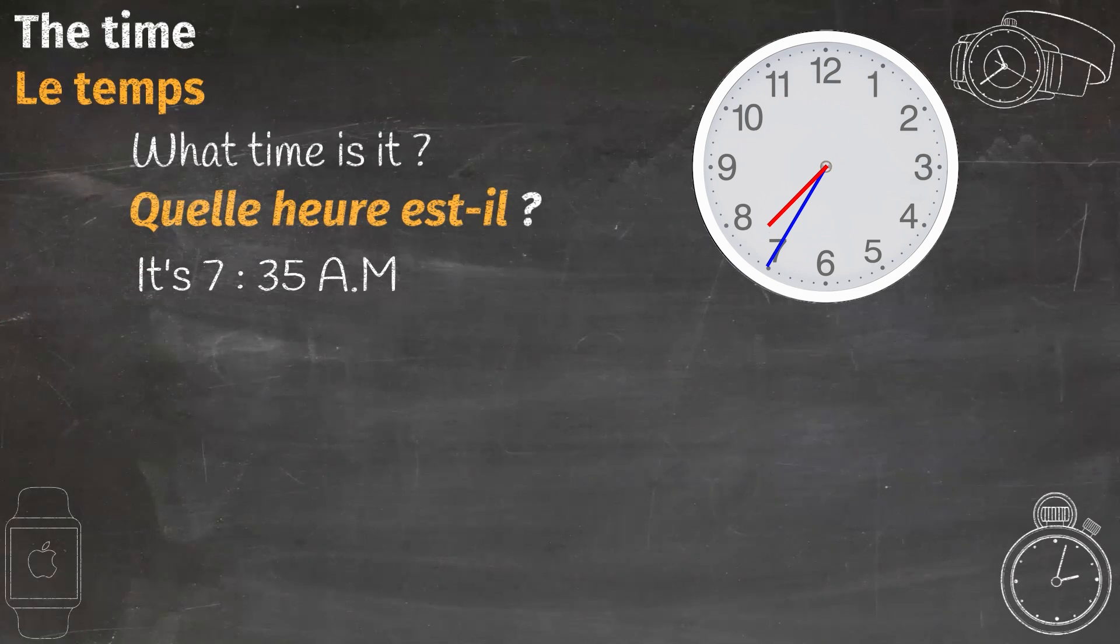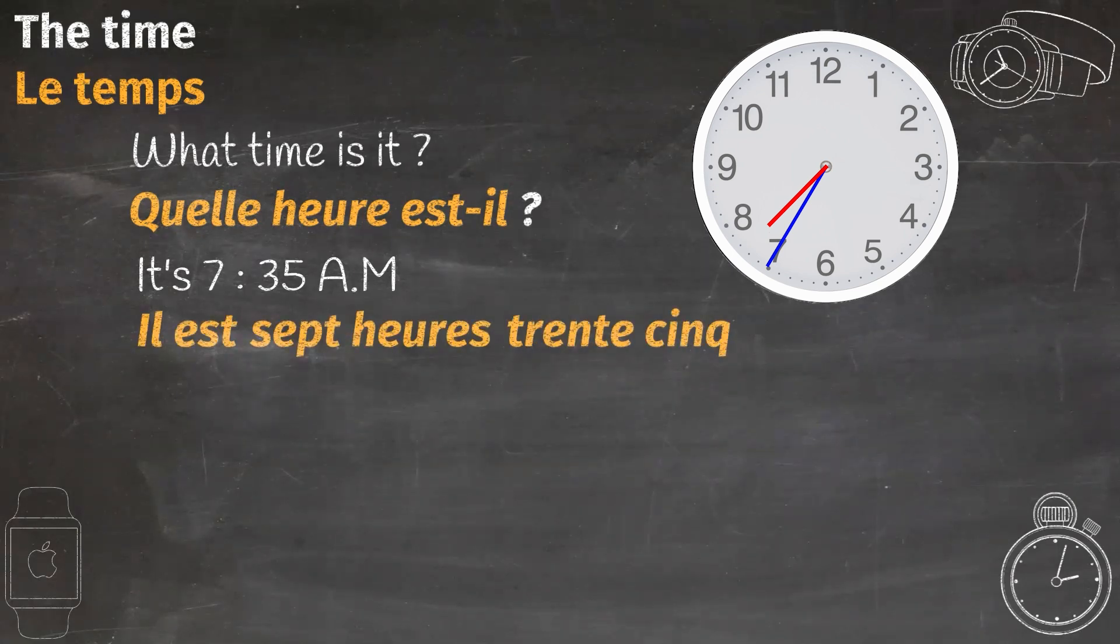It's 7:35 a.m. Guys, I used this example here to teach you how to say a.m. and p.m. in French. But before starting, remember that French people usually use the 24-hour system. So there is barely a misunderstanding. And this example is just in case. Let's start. Il est sept heures trente-cinq, which means 35. And now a.m., we would say du matin. These two words, du and matin, mean of the morning. So we are actually saying it's 7:35 of the morning in French. Together, il est sept heures trente-cinq du matin.